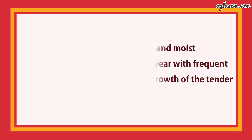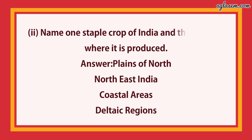Tea bushes require a warm and moist frost-free climate all through the year, with frequent showers that ensure continuous growth of the tender leaves. Second part: name one staple crop of India and the regions where it is produced. Answer: plains of north and northeast India, coastal areas, and deltaic regions.